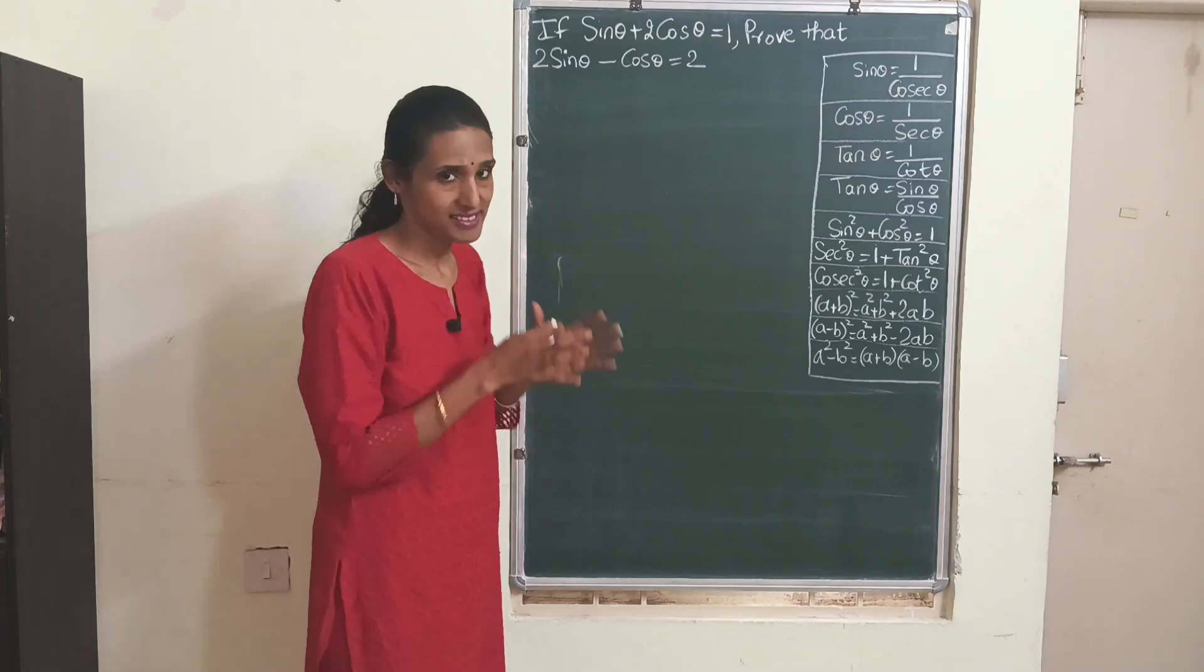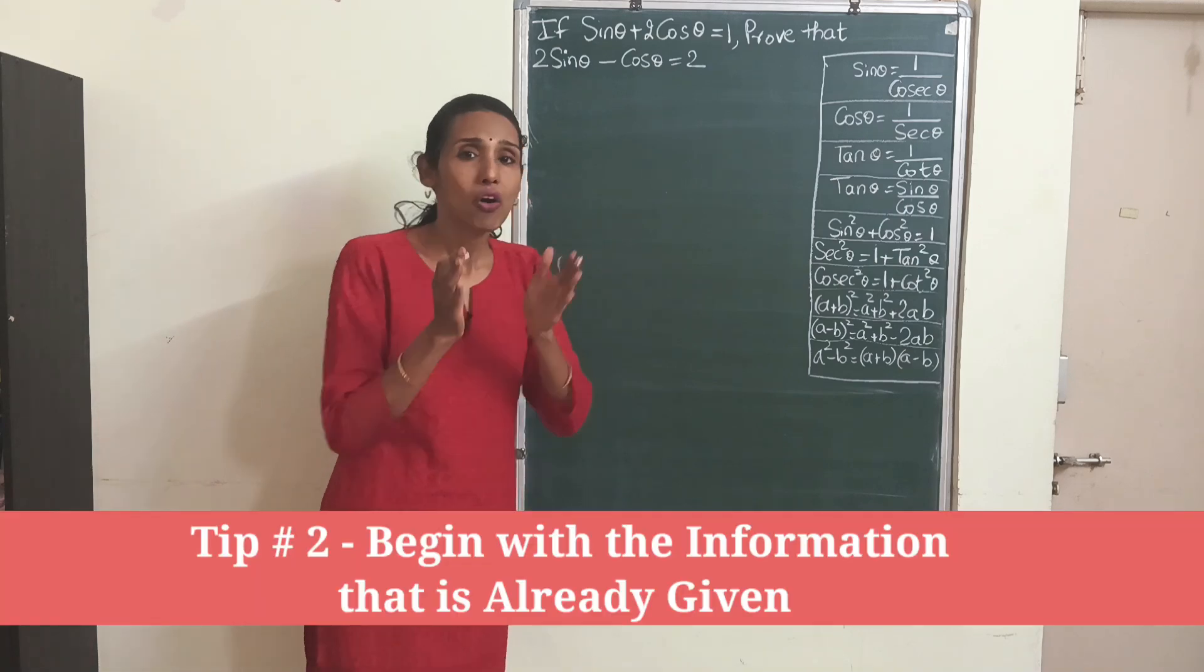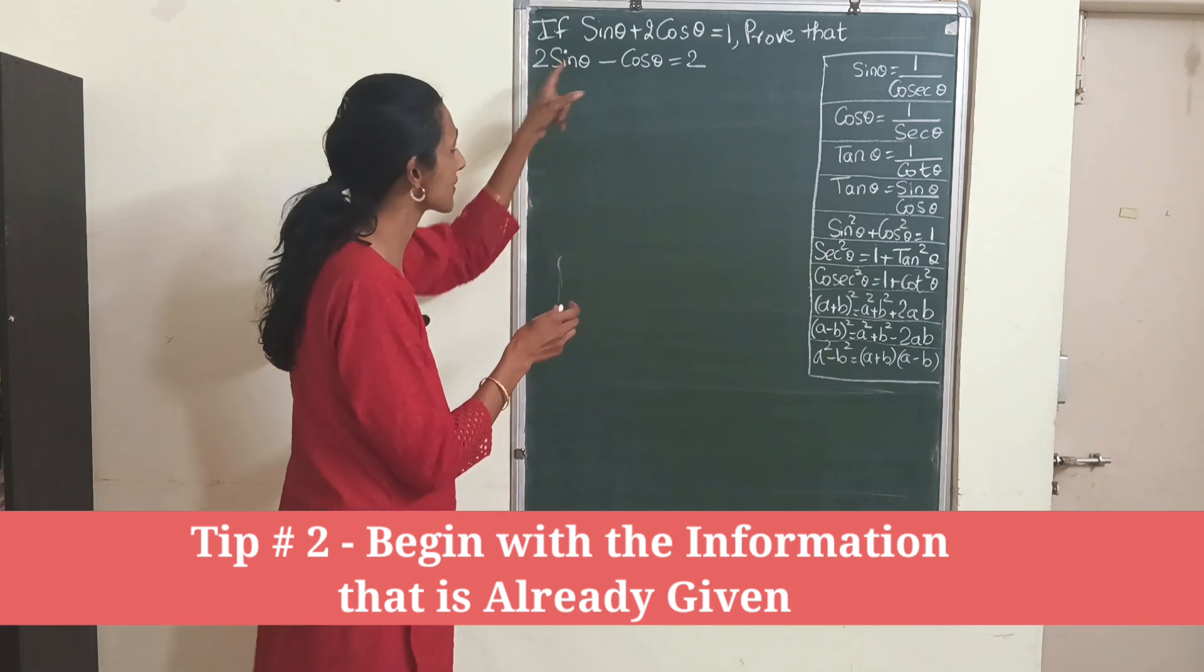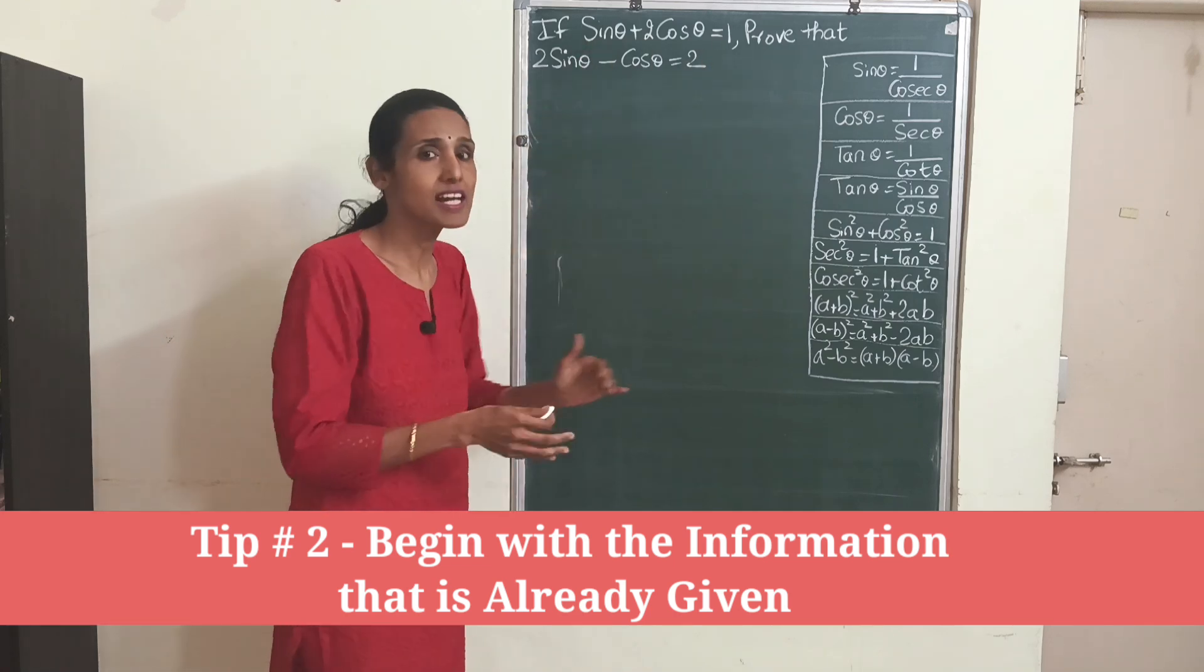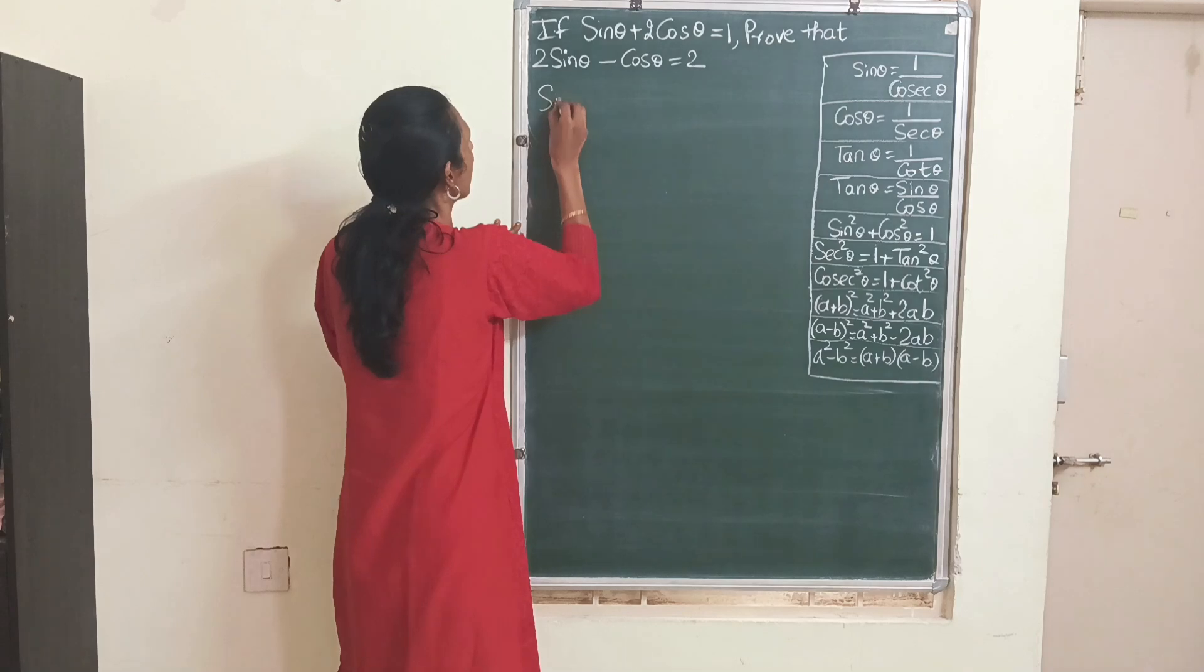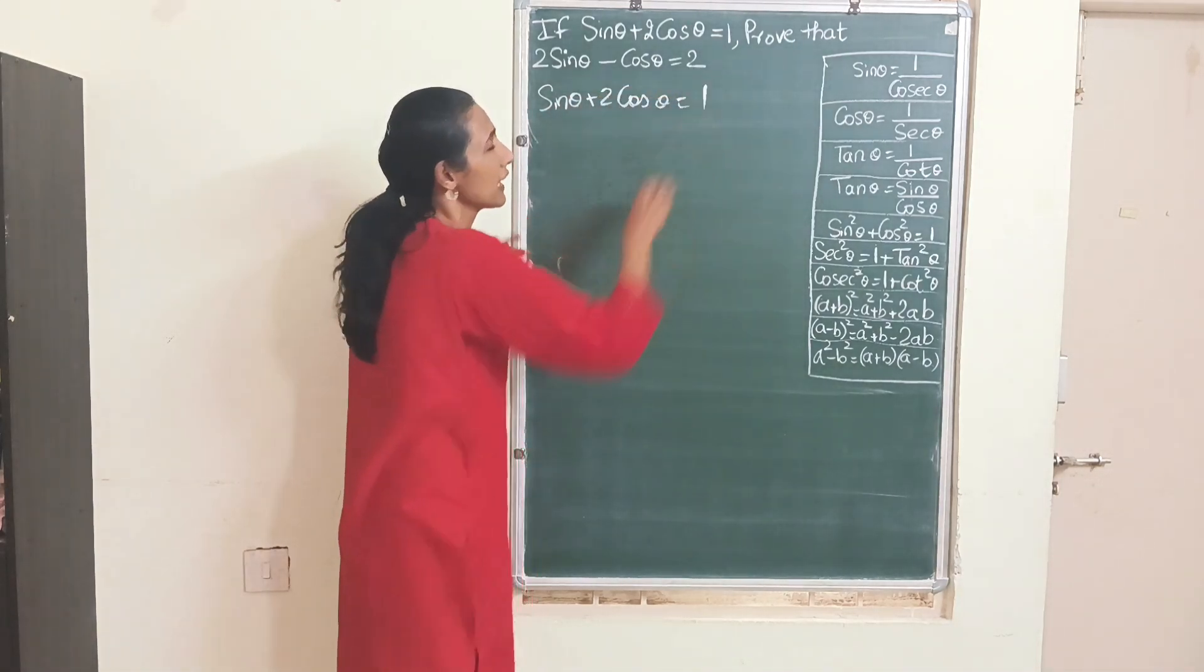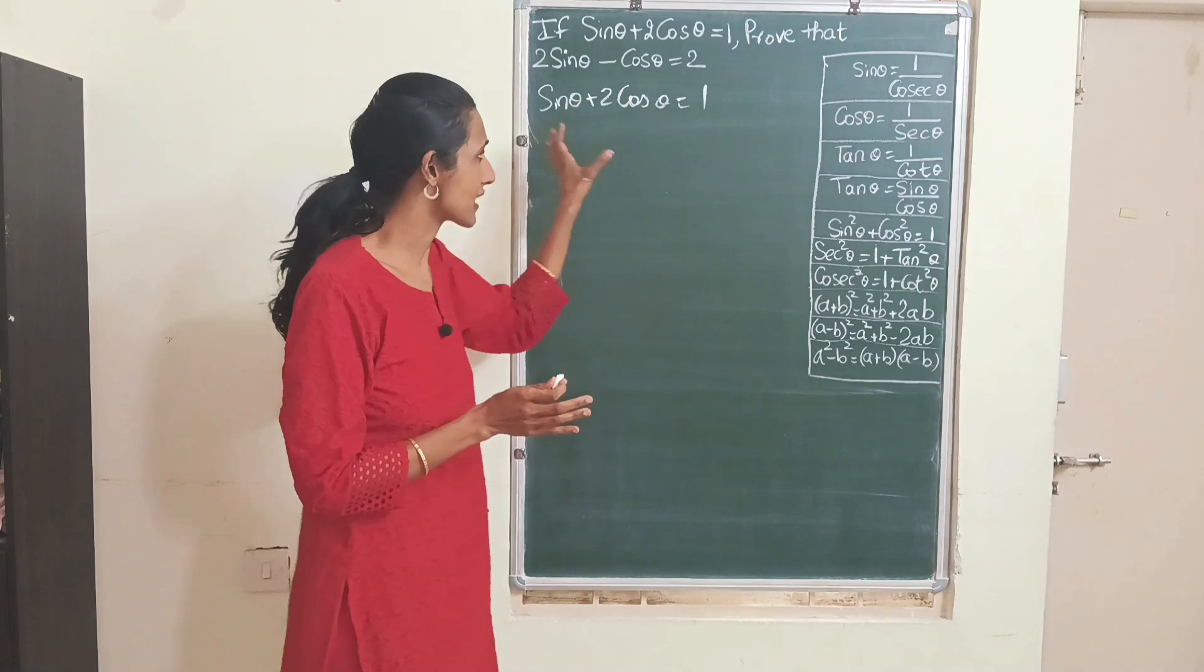Once that is done, the next step is always start with what is given to us. What is given to us is this expression, start with that expression. So we have sin θ plus 2 cos θ equals 1. We will start with that.